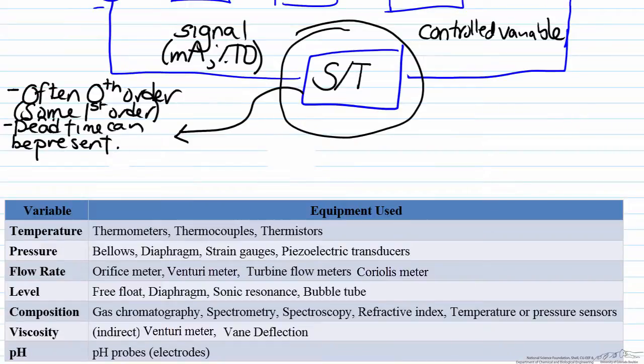In the table here we have provided a list of different types of sensors. This is definitely not a full list, there are a whole list of types of sensors for the different variables that we have here: temperature, pressure, flow rate, level, composition, viscosity, and pH.